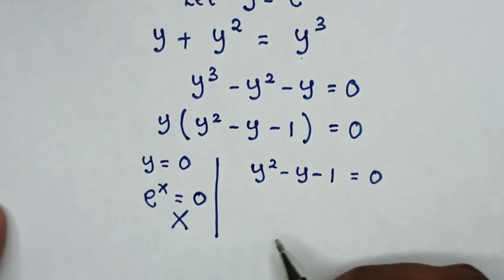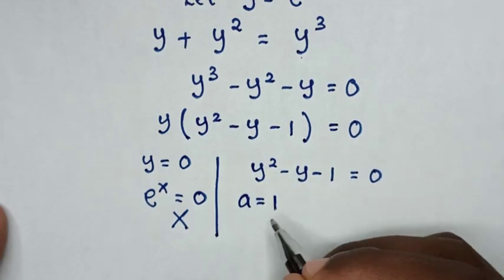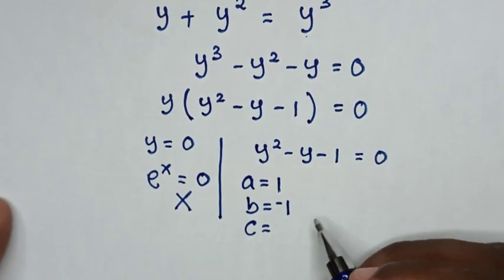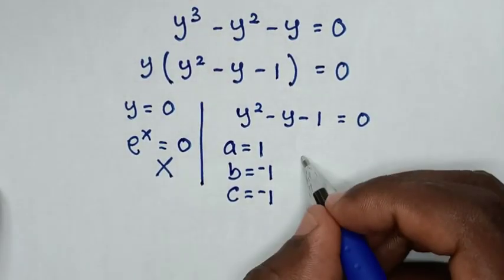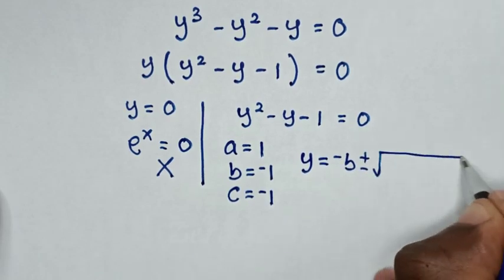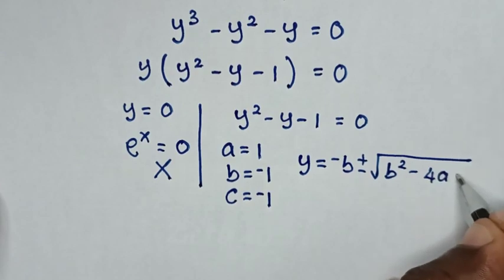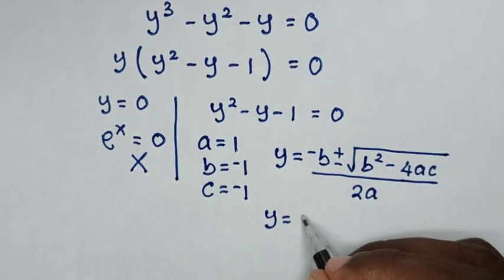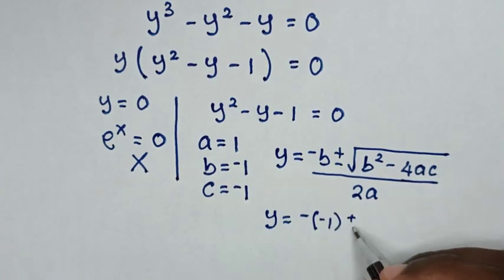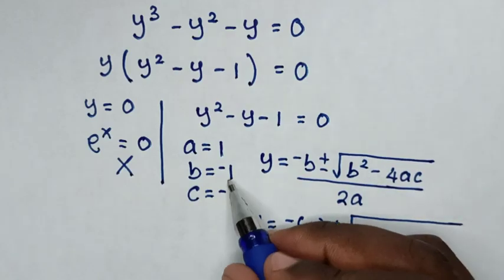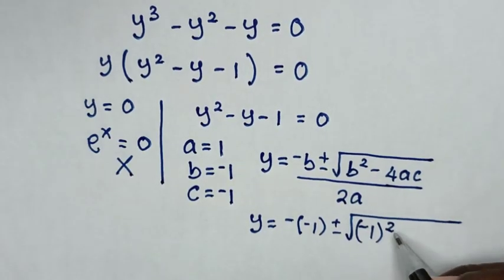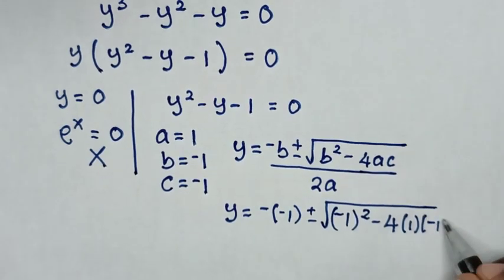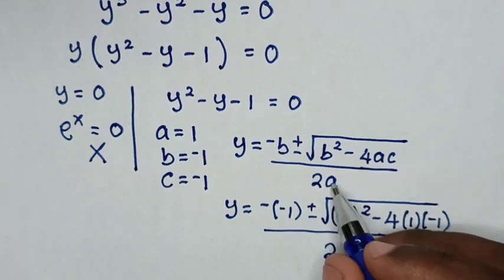To solve the quadratic equation y squared minus y minus 1 equals 0, we identify a equals 1 (coefficient of y squared), b equals negative 1 (coefficient of y), and c equals negative 1 (constant). Using the quadratic formula, y equals negative b plus or minus square root of b squared minus 4ac, all over 2a.